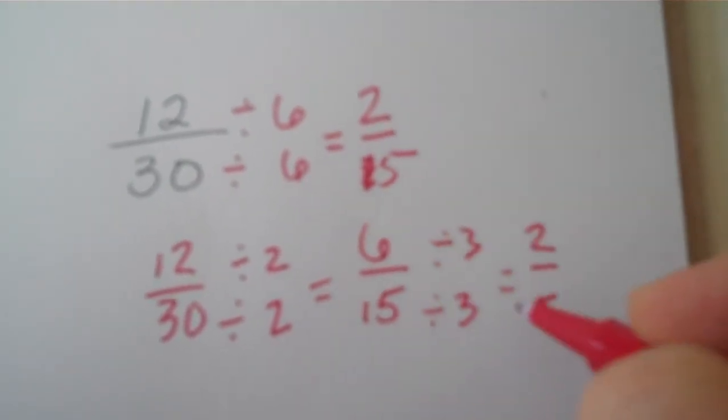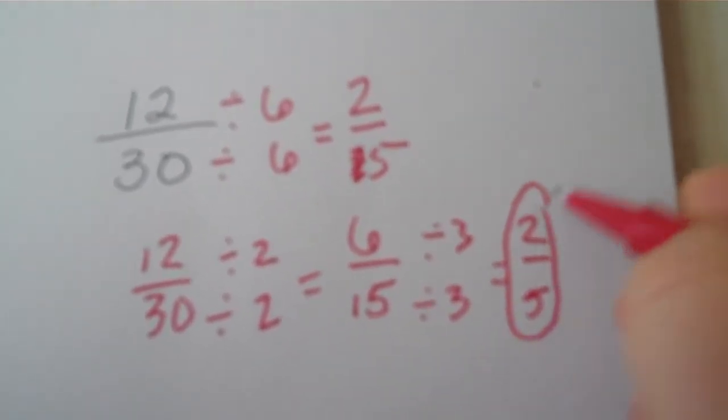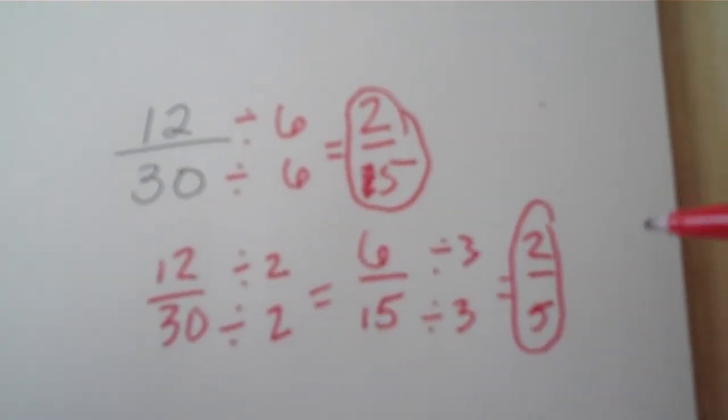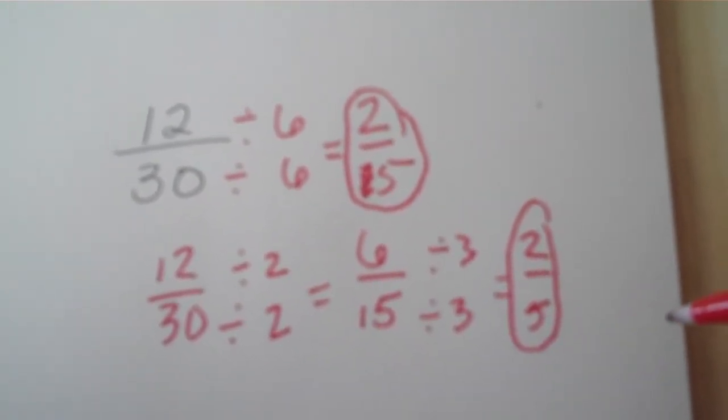I also got 2 fifths up here. 2 fifths is the same as 12 thirtieths, but it's written in simplest form.